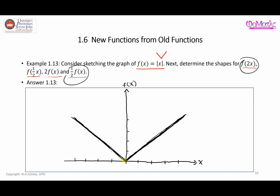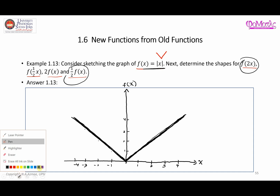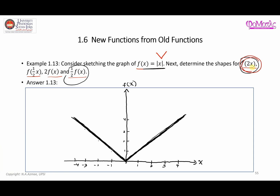So this is the original function. I'm going to write down the numbers: 1, 2, 3, 4 and negative 1, negative 2, negative 3, negative 4. Now we're going to look at the first question. You can see that we have introduced a constant right next to x.